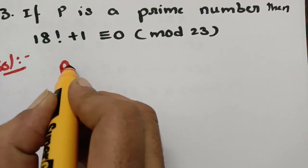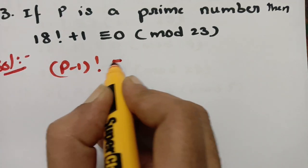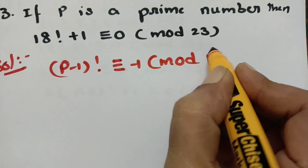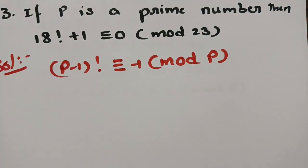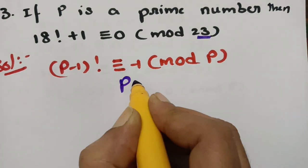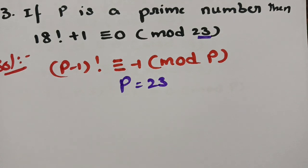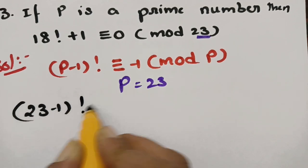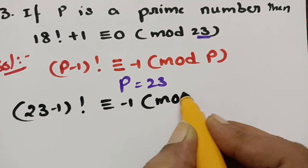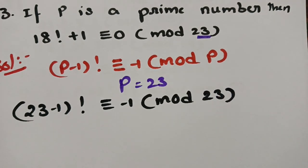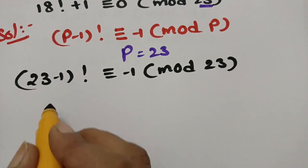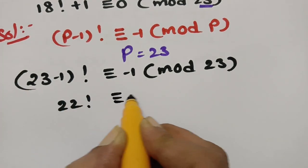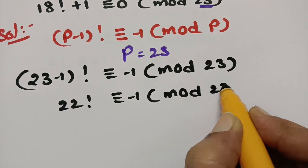According to Wilson's theorem, (P−1)! ≡ −1 (mod P). From the question, we take P = 23 as the prime number. Substituting P = 23: (23−1)! ≡ −1 (mod 23), so 22! ≡ −1 (mod 23).